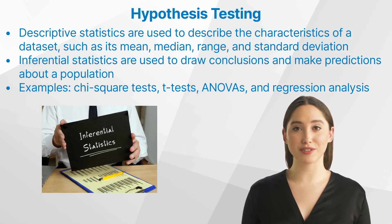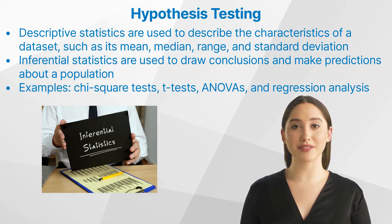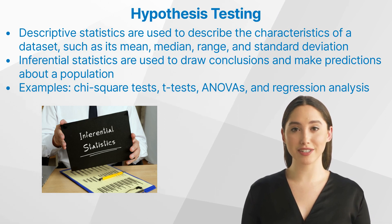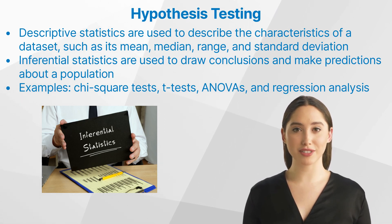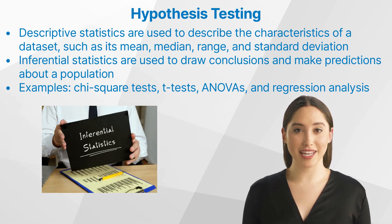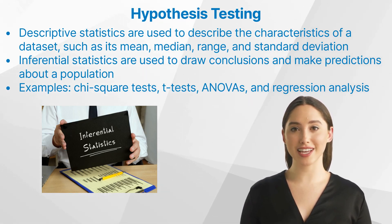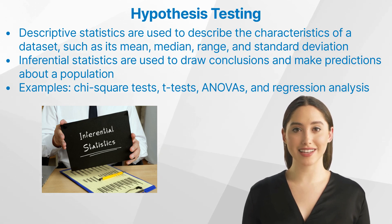Descriptive statistics are used to describe the characteristics of a data set, such as its mean, median, range, and standard deviation. Inferential statistics are used to draw conclusions and make predictions about a population based on data collected from a sample of that population. Examples of common statistical tests include chi-square tests, t-tests, ANOVAs, and regression analysis.